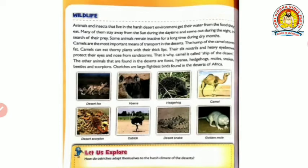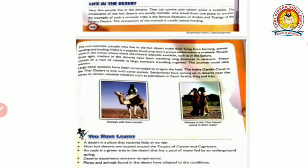Other animals found in the deserts are foxes, hyenas, hedgehogs, moles, snakes, beetles and scorpions. Ostriches are large flightless birds found in the deserts of Africa. Now, life in the desert. Very few people live in the deserts - the population there is not large unlike other places. They can survive only where water is available. In deserts, water is very scarce, so human survival is seen only around where water is found.